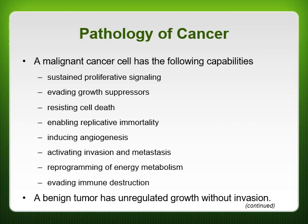We'll talk about the pathology of cancer. A benign tumor has unregulated growth without invasion — that's important because without invasion means it's not cancer. A malignant cancer cell, however, has the following capabilities: sustained proliferative signaling, evading growth suppressors so it just keeps growing regardless, and it resists cell death. It enables replicative immortality, continuing to replicate at an unsafe, abnormal rate.